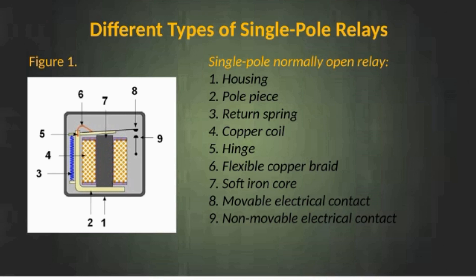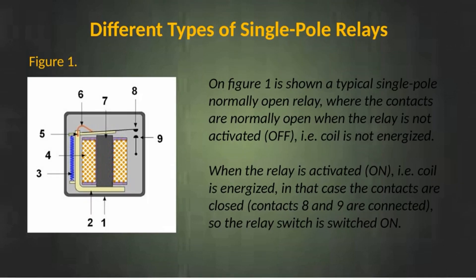Single pole normally open relay. The components are: 1. Housing, 2. Pole piece, 3. Return spring, 4. Copper coil, 5. Hinge, 6. Flexible copper braid, 7. Soft iron core, 8. Moveable electrical contact, 9. Non-movable electrical contact. On figure 1 is shown a typical single pole normally open relay, where the contacts are normally open when the relay is not activated, that is the coil is not energized. When the relay is activated and the coil is energized, the contacts are closed — contacts 8 and 9 are connected — so the relay switch is switched on.